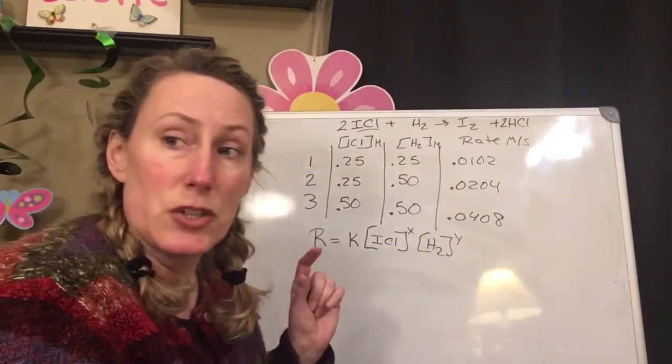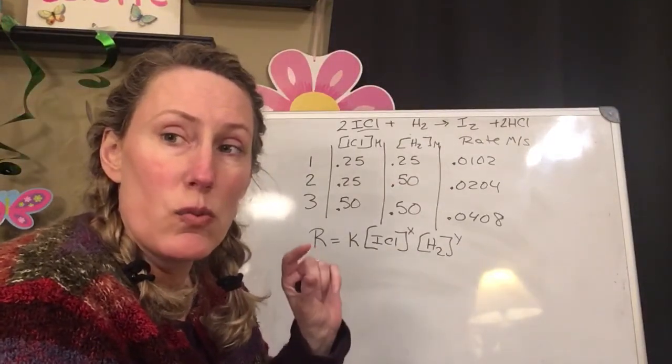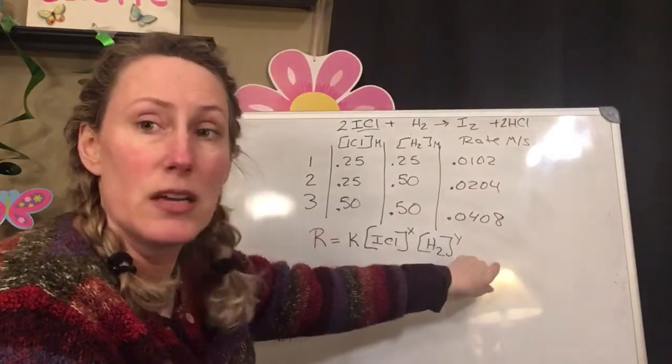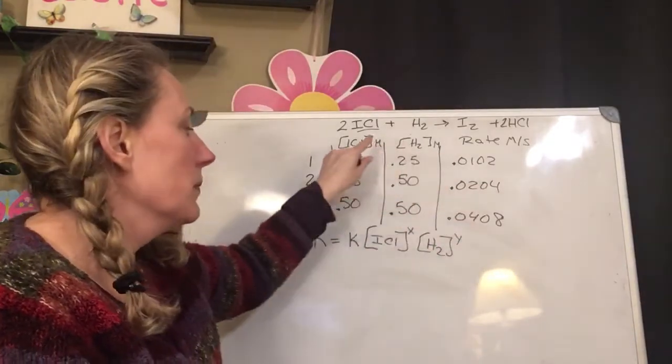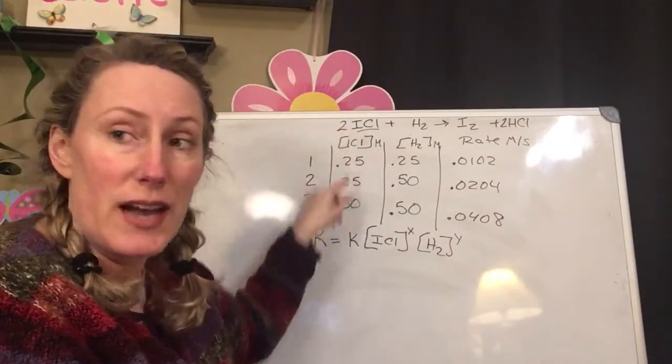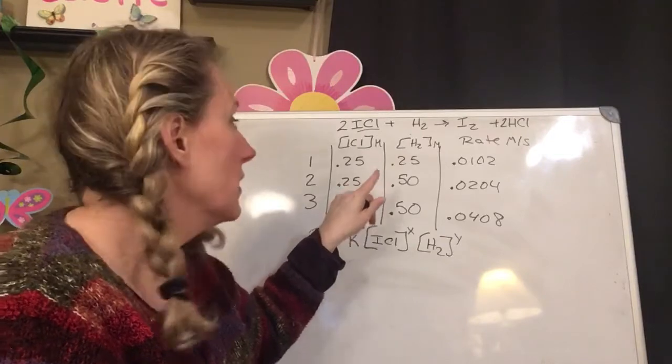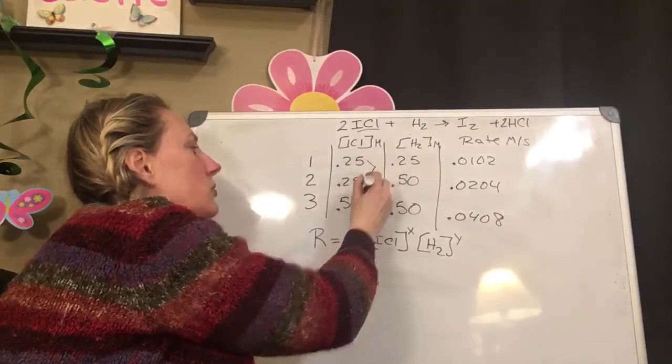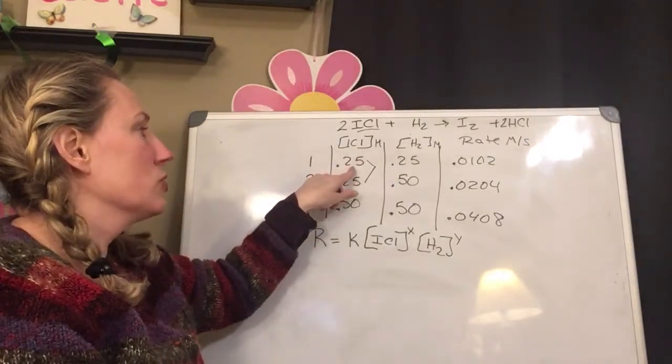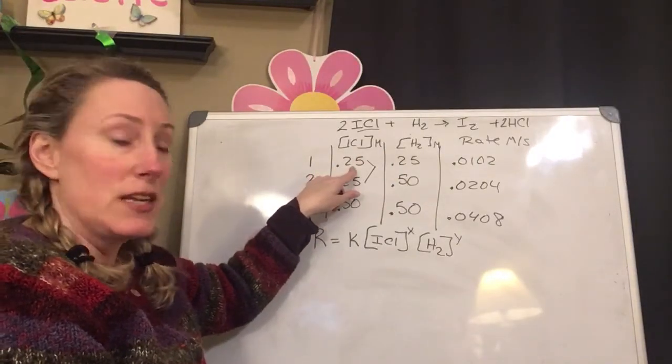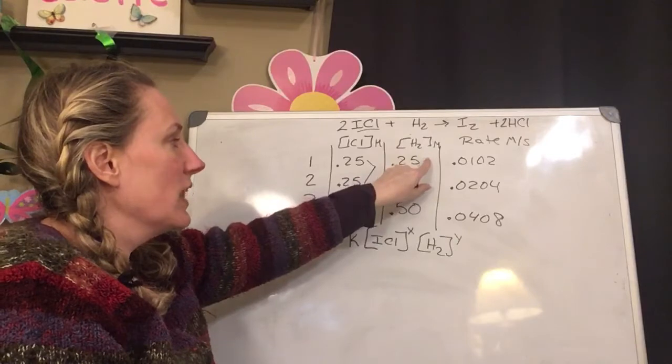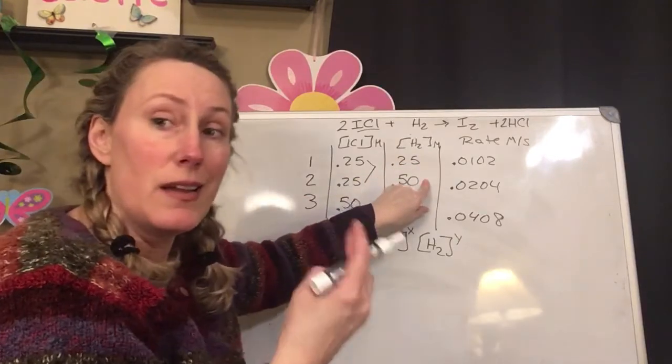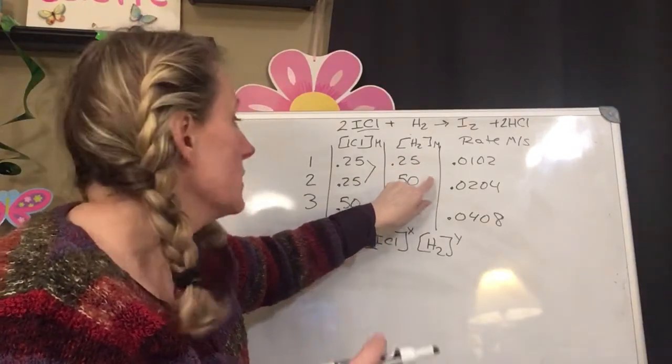So what we need to do is we need to look at the trials and see what happened to the rate when we change the concentration of these chemicals. So if I look at 1 and 2, my concentration of ICl didn't change, but my concentration of H2 did. It got twice as strong. So this doubled.